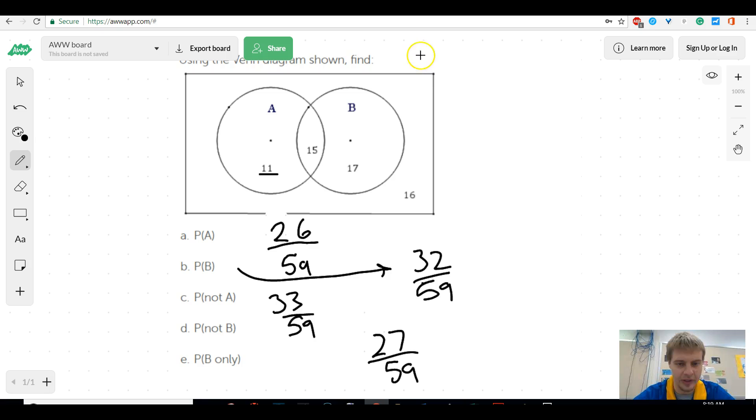And then, B only. Well, only B would just be the 17. Because these are also B, but they're also A, so there's kind of overlap there, and they want only B, so that would be 17 over 59. Okay? So again, for any of these fractions, or any of these probabilities, all you're doing is making a fraction, and you're saying it's this over this. Let's try another one.